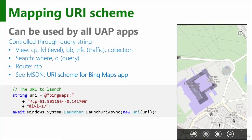We have a Bing Maps URI scheme, and it has a load of different things you can specify in the query string. Check on MSDN — there's a whole bunch of options. The topic is URI scheme for Bing Maps app. Here's a simple example where we set the center point: CP is equal to a lat/long — latitude and longitude — and the zoom level. This particular case is 17. Then you just call Windows.System.LaunchUriAsync.